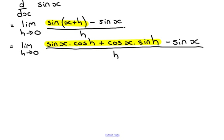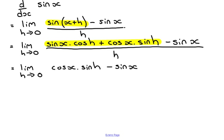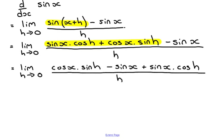From this point, we rearrange the numerator so that the sine x terms are next to each other. We put the cos x sine h term first, then minus sine x, then plus sine x cos h, all over h. The reason for this rearranging is so that in the last two terms we can take out a common factor of sine x.